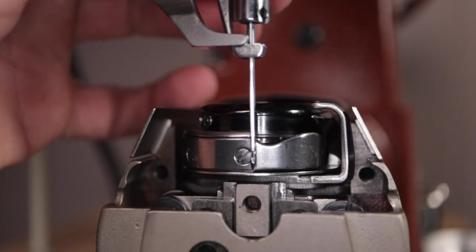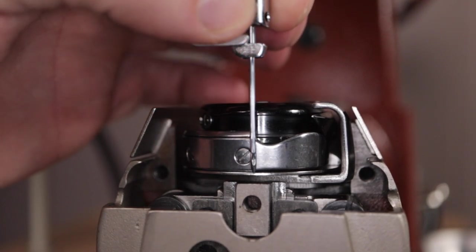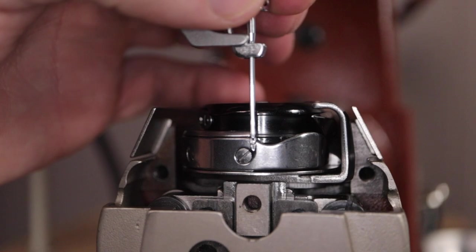To set the needle bar properly, you want to bring the top of the needle eye and have it line up with the edge of the rotating hook assembly. Then tighten the needle bar screw back into place.